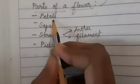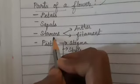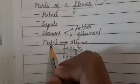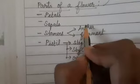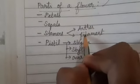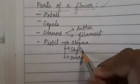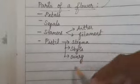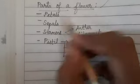Now let us practice. In the parts of the flower you will have four parts: petals, sepals, stamens, and pistil. In the stamen, two parts should be there — anther and filament. In the pistil, three parts should be there — stigma, style, and ovary. When you draw all these things together it is the parts of a flower.